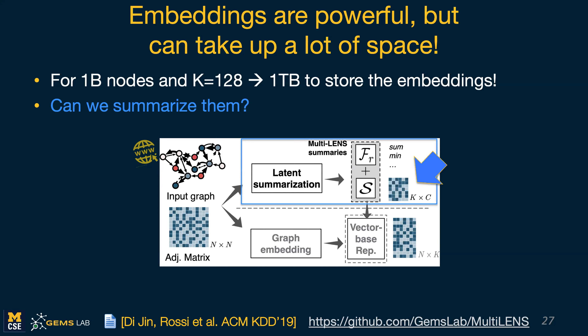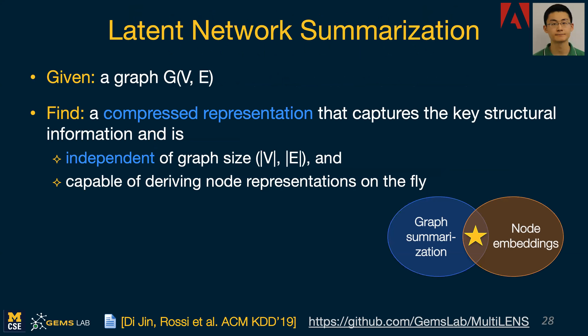The question we wanted to look into is: can we summarize these? We defined the problem of latent network summarization. Given a graph, we want to find a compressed representation that captures key structural properties of the graph, but this representation must be independent of the graph size — the number of nodes and edges. And because we want to support downstream tasks, we also want to be able to derive node representations on the fly.